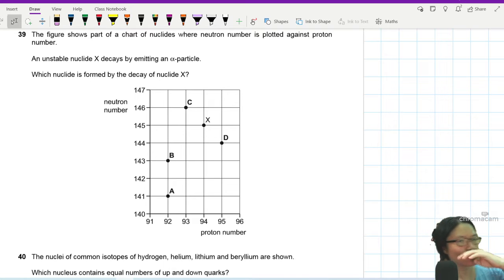Question 39. The figure shows the part of a chart of a nuclide where the neutron number is plotted against proton number. An unstable nuclide X decays by emitting an alpha particle. Which nuclide is formed by the decay of nuclide X?